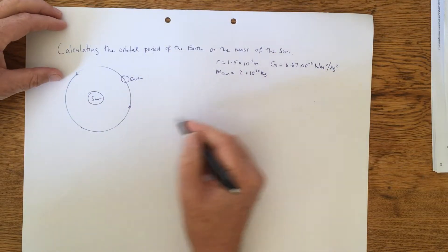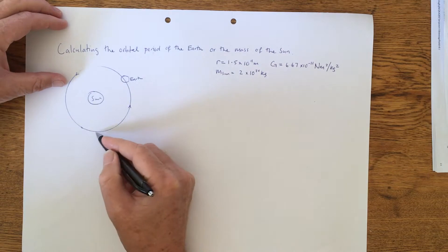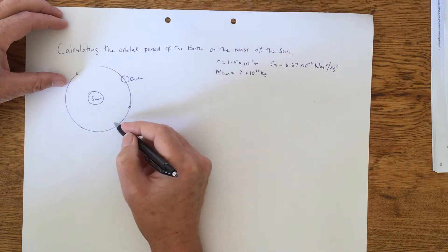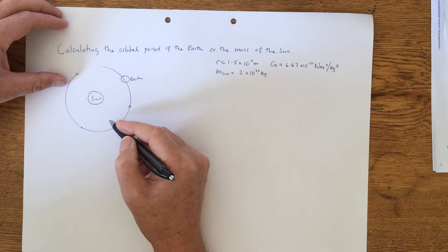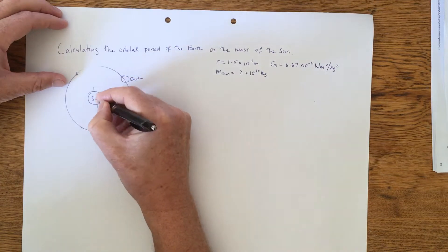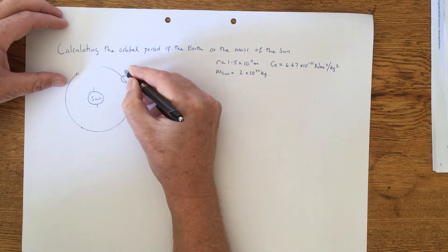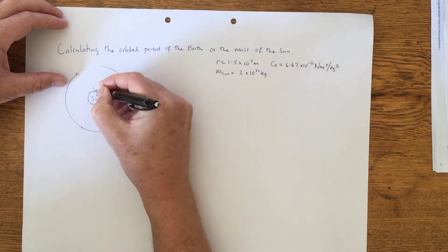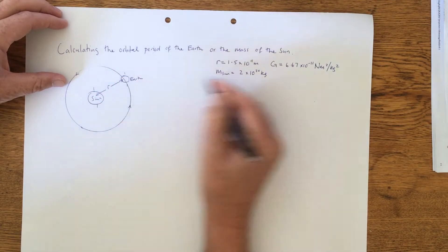So, the first thing that we need to be aware of is that the Earth is orbiting the Sun in an almost circular path. And that radius is from the centre here to the centre of the Earth, so we'll just call that R there. So from that centre there to that centre, that's the radius there.